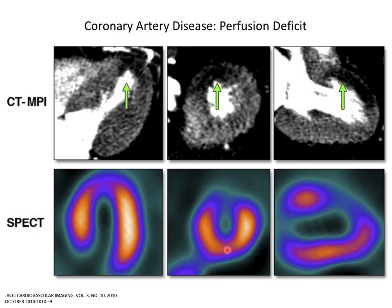The first thing you notice about SPECT images, besides the color, is that they are really blurry — spatial resolution is super low, it's essentially a blurogram. However, even given that, you still see a major chunk of tissue missing signal. You expect a donut shape; instead you see a horseshoe. Given that, you would detect this perfusion deficit 100% of the time.